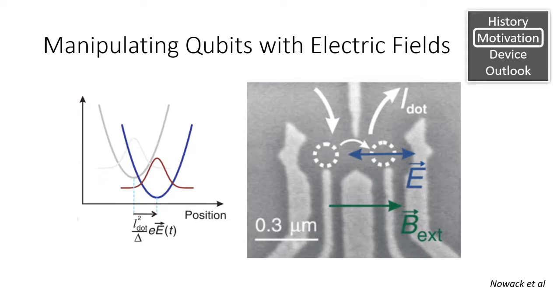So how does this work? The whole point of using spin as a flippable bit was that spin is not affected by electric fields. However, electron spin is coupled to the electron's orbital, so by perturbing the electron's position, we can also affect its spin.